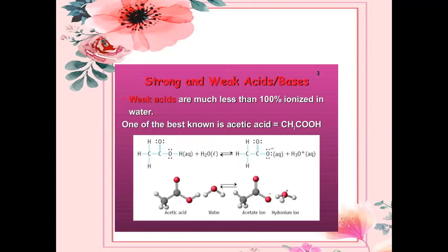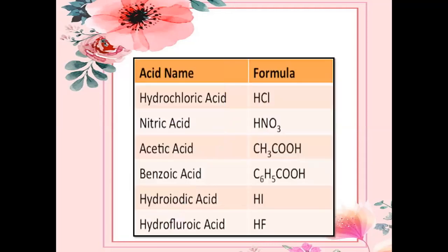Weak acids are much less than 100% ionized in water. One of the best known weak acids is acetic acid, which is low ionized. Strong acids include hydrochloric acid and nitric acid. Other examples include acetic acid, benzoic acid, hydroiodic acid, and hydrofluoric acid, some of which are weak acids.